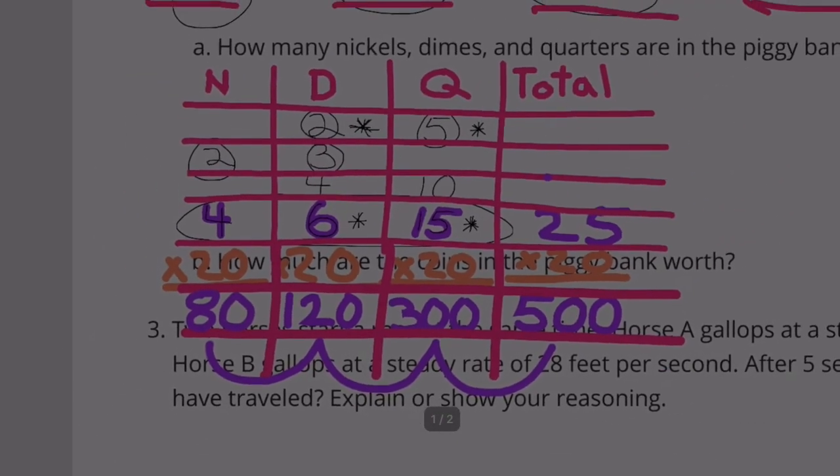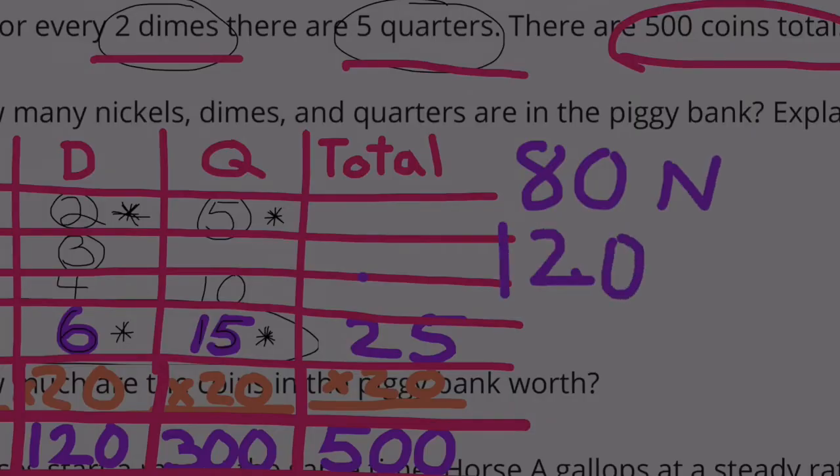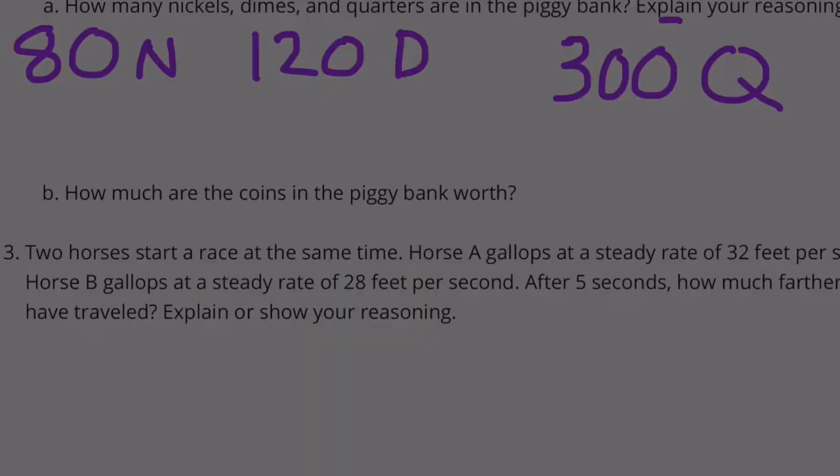So to answer this question, we have 80 nickels, 120 dimes, and 300 quarters.